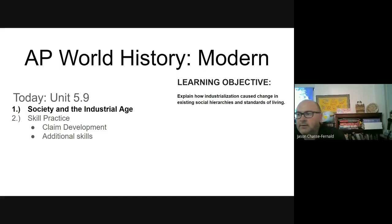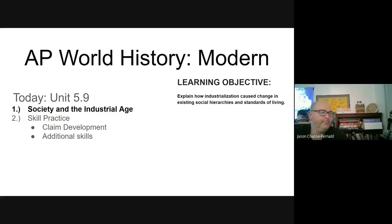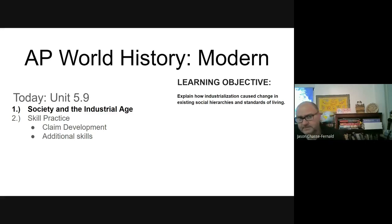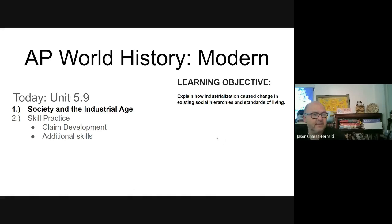Hello and welcome back to AP World History Modern. Today we're going to go through topic 5.9, unit 5.9, society and the industrial age. Our learning objective is to explain how industrialization caused change in existing social hierarchies and standard of living.